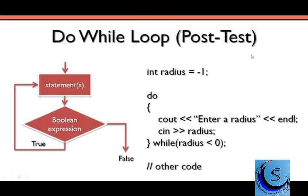So let's take a look at the last looping structure, and that's the do-while loop. The do-while loop is a little bit different from the while loop and the for loop, in that it's a post-test loop. What does that mean? Looking at our diagram, we can execute the statement or statements one time before we ever test that loop continuation condition or Boolean expression. So we execute the statement one time, test the loop continuation condition, and then if it's true, we come back and execute those statements again. If it turns out to be false, we go down and execute some other code.